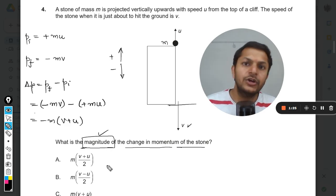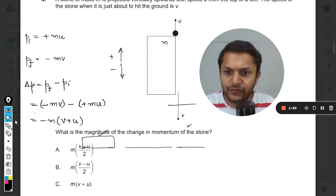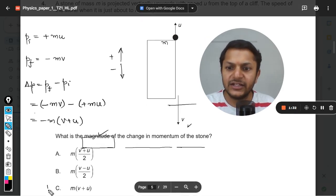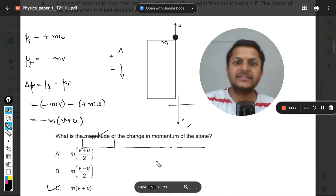And yes, the question is only talking about magnitude, so we are not concerned with the direction. So the negative sign can be dropped and your answer will be definitely option C, which is m into v plus u. So C is going to be the correct option for this question.